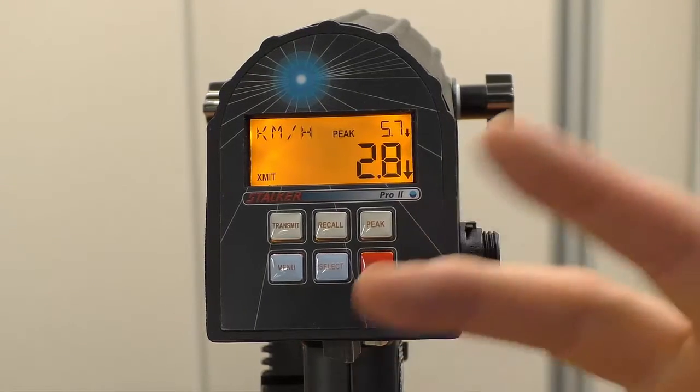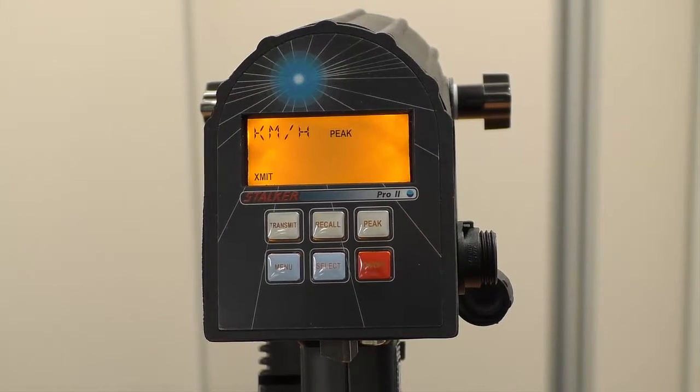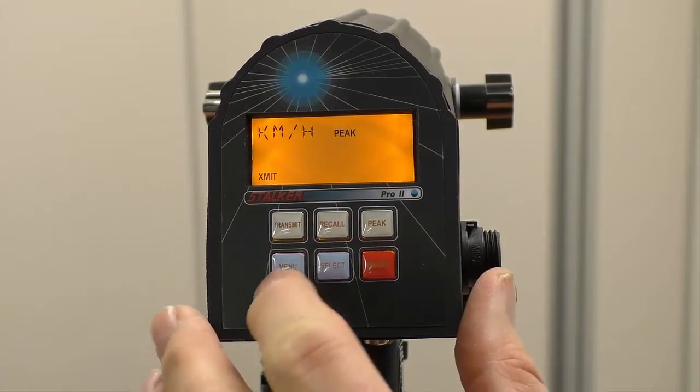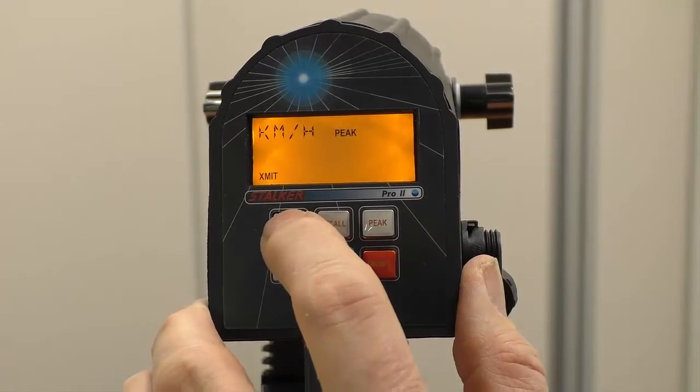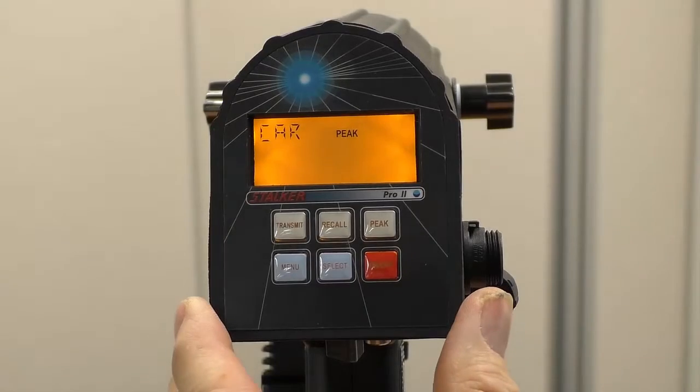Now we're never that certain how it's going to be configured. I've always got to check this configuration. At the moment, if I turn this transmit off, I can see the fact that it's been set up for car.